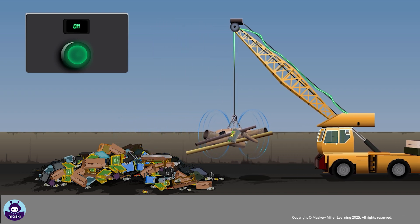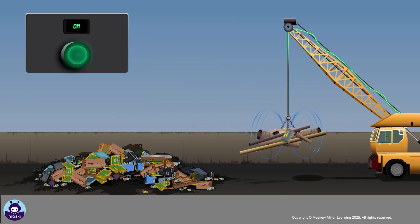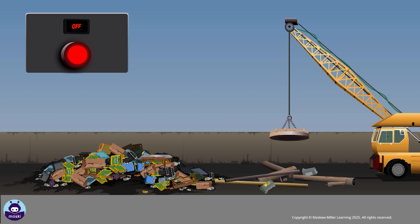The lift holding the objects can then be moved. When the switch is turned off, the lift loses its magnetism and the metallic objects are dropped.